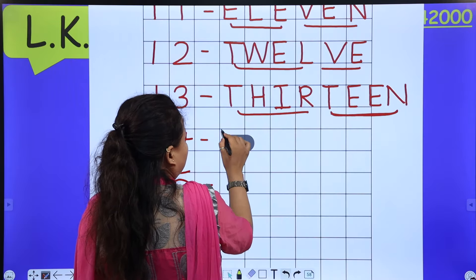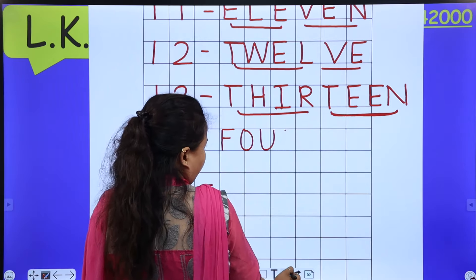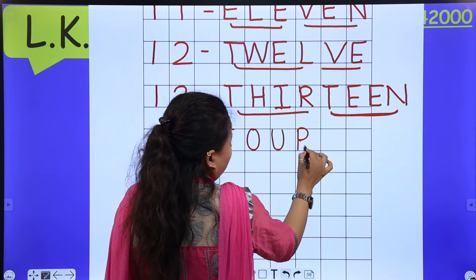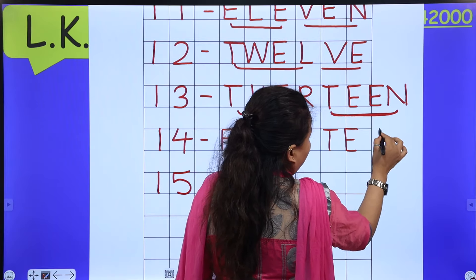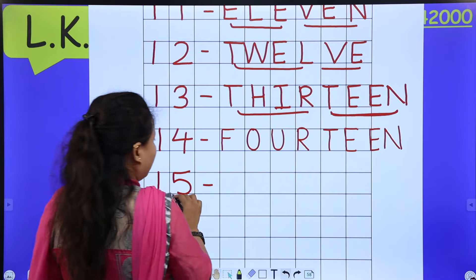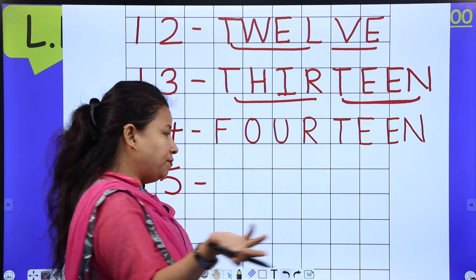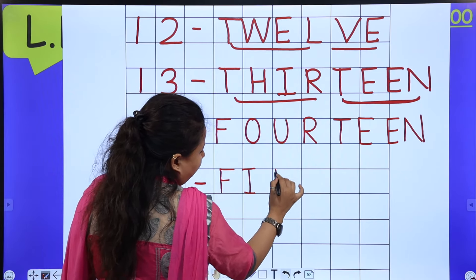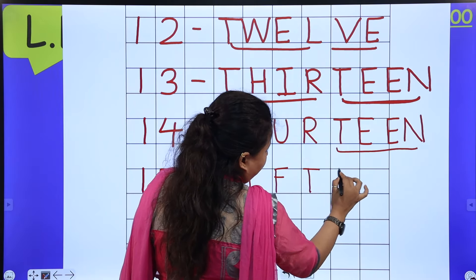Next is 14. How do we spell 'four'? F-O-U-R. So fourteen is F-O-U-R-T-E-E-N. Just like you wrote 13, similarly write 14. Now next is 15. The first part is FIF — F-I-F — and then TEEN. So fifteen is F-I-F-T-E-E-N.